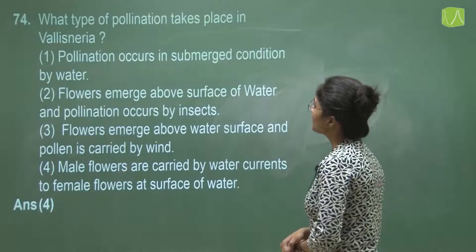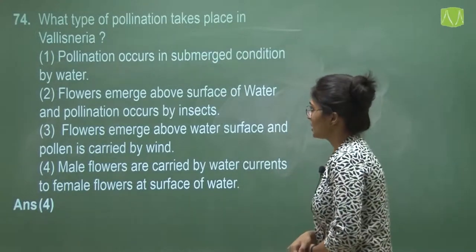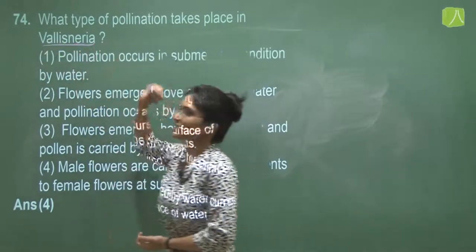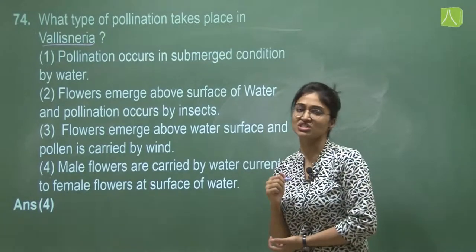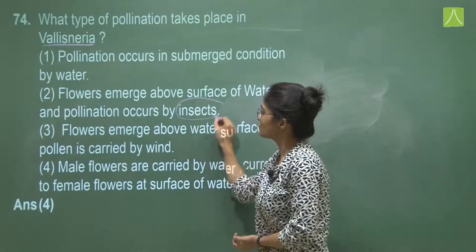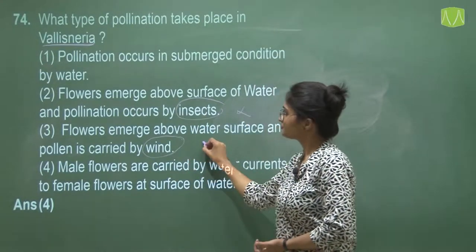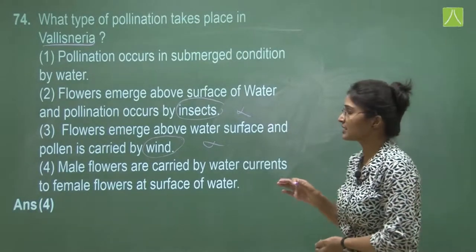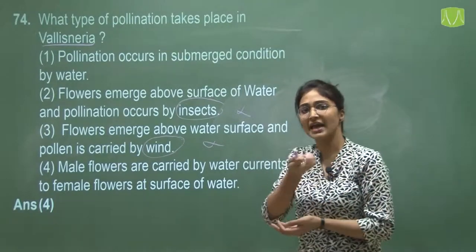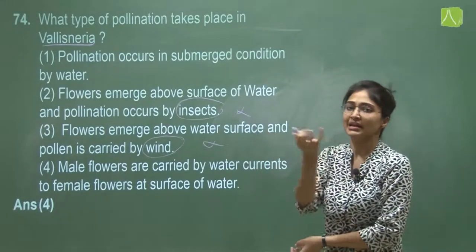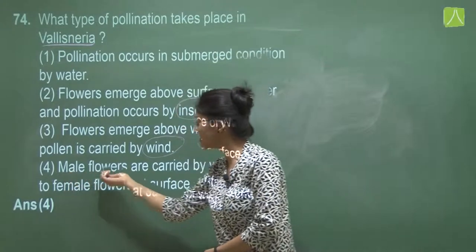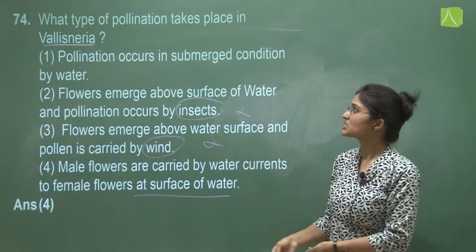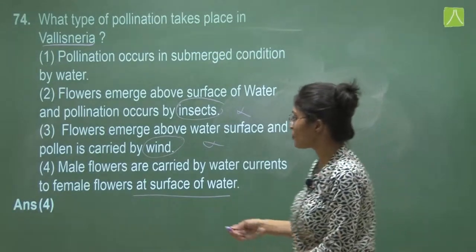Question 74 asks what type of pollination takes place in Vallisneria. Vallisneria is pollinated by water, so we can eliminate options mentioning insects and wind. We are left with options one and four. Option one says pollination occurs in a submerged condition. However, in Vallisneria the male flower is carried by water currents to the female flower at the surface of water — this is epihydrophily. So option four is correct.